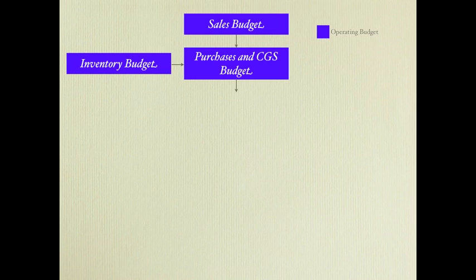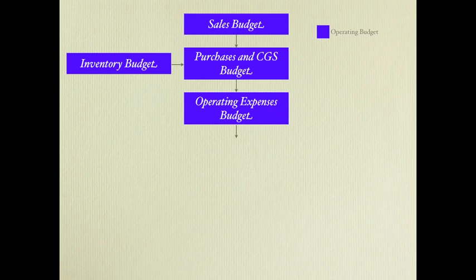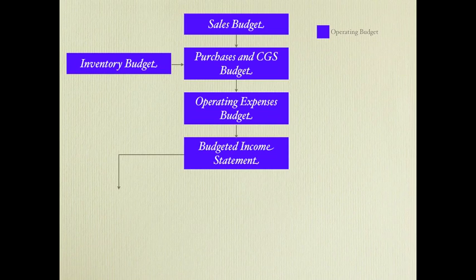Then we want to project our operating expenses budget — basically what it sounds like. We want to determine or project what our operating expenses for our business are going to be, and then we can create our budgeted income statement. So part of this master budget includes our budgeted financial statements, and the budgeted income statement is the first one.